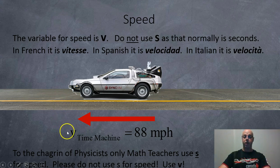So for example, the speed of this time machine is 88 miles per hour.